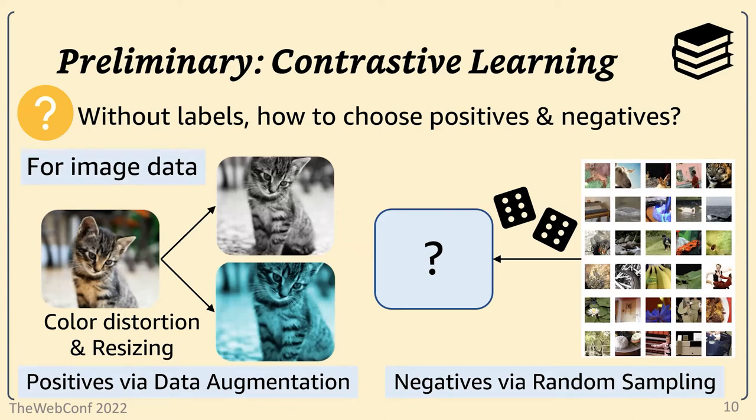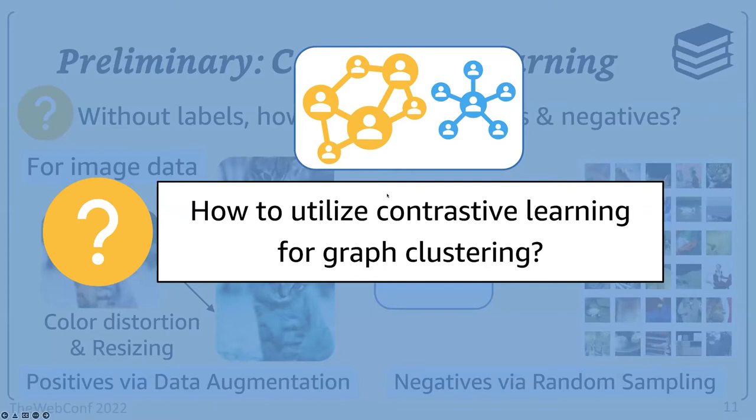For image data, for instance, positive samples are often obtained by taking different views of the data, for instance, via data augmentation techniques such as color distortion and resizing. And negative samples are often randomly selected from the entire pool of samples. Then, given no ground truth node labels, how can we utilize contrastive learning for graph clustering?